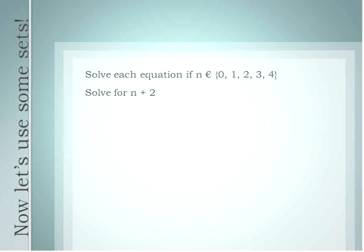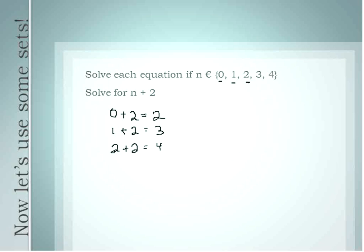Let's move on to one that's a little bit different. This one's not an equation — it's an expression. When you get an expression like this and your set is {0, 1, 2, 3, 4}, what you're going to get is what we call a solution set — a set of answers. For the expression n plus 2: substituting 0 gives 0 plus 2 equals 2; substituting 1 gives 1 plus 2 equals 3; 2 plus 2 equals 4; 3 plus 2 equals 5; and 4 plus 2 equals 6.